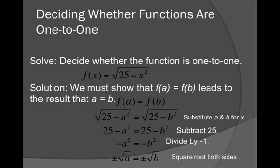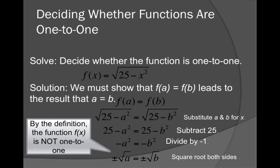And then I'm going to square root both sides. So I have ±√a = ±√b. So are they equal? What do we do here? Well, by definition, the function f(x) is not 1 to 1. Well, why is it not 1 to 1?